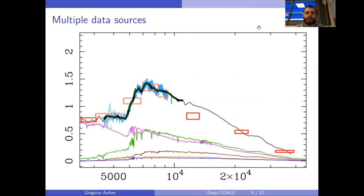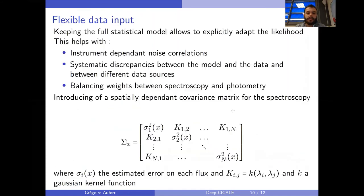One of the main goals of CIGALE is to be able to handle different types of data, both spectroscopic and photometric, and to be able to not have every time the same bands observed for every galaxy. In order to do that, we need to be able to customize the likelihood model. That's one of the main gains we have in not using directly a neural network to estimate the parameters from the observed SED. Keeping the full statistical model allows us to adapt the likelihood to different cases where you could have instrument-dependent noise correlations, for example, or systematic discrepancies between the model and data or between spectroscopy and photometry.